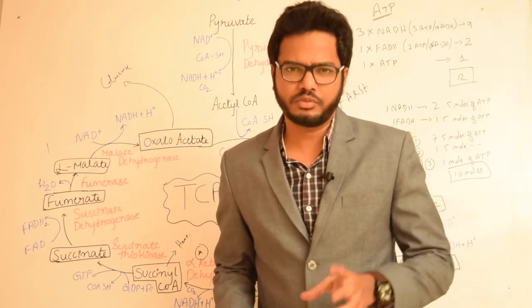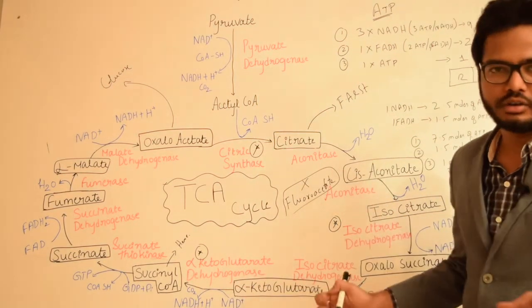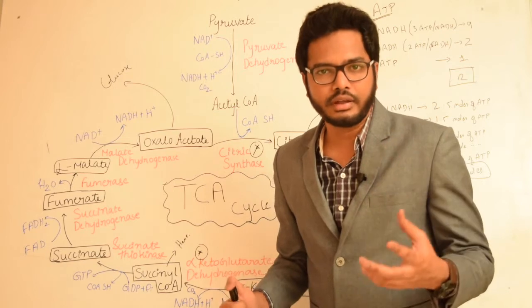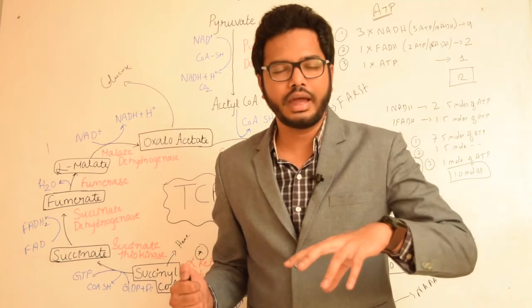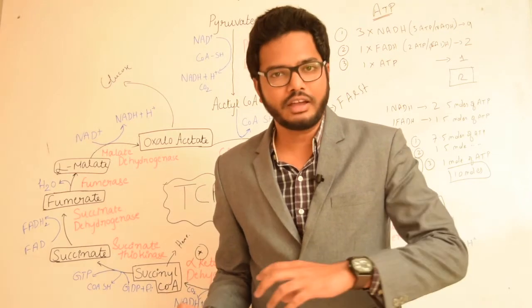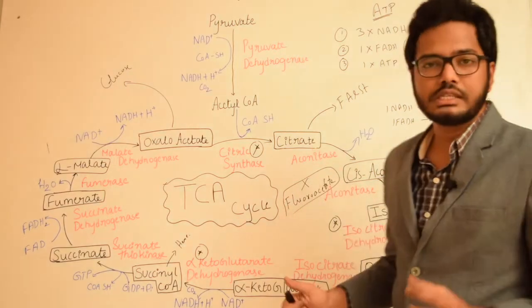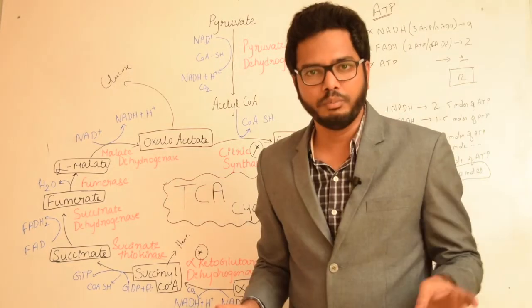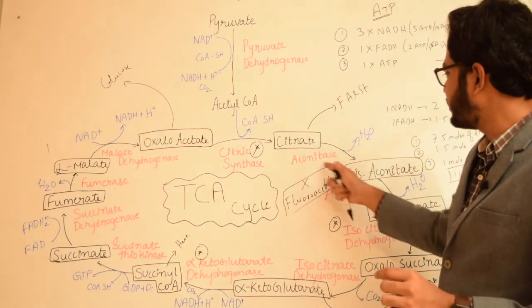Fluoroacetate is considered a non-competitive inhibitor of the enzyme aconitase — it is called a suicide substrate. Fluoroacetate condenses with oxaloacetate to form fluorocitrate. The cell's metabolism deems fluorocitrate to be toxic, leading to cessation of the citric acid cycle. Even though fluoroacetate itself is non-toxic, once it condenses with oxaloacetate it forms the toxic fluorocitrate, causing the cell to effectively commit suicide — hence the term suicide substrate.